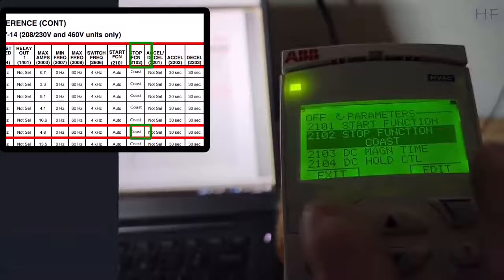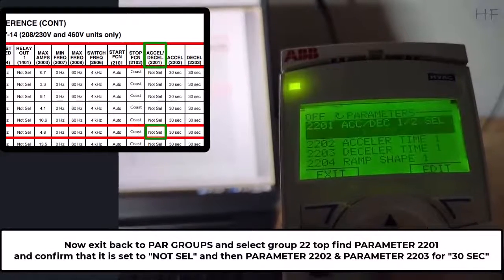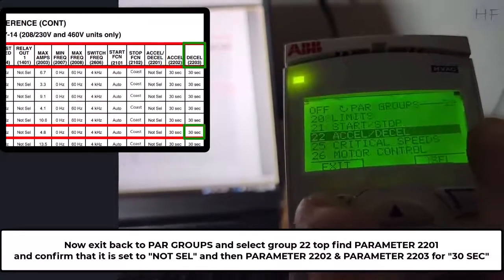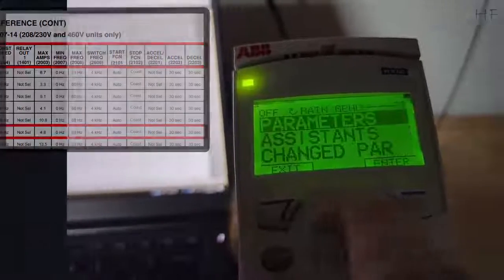Now exit back to parameter groups and find parameter 2201 and confirm that it is set for not selected, then confirm that parameters 2202 and 2203 are set for 30 seconds.